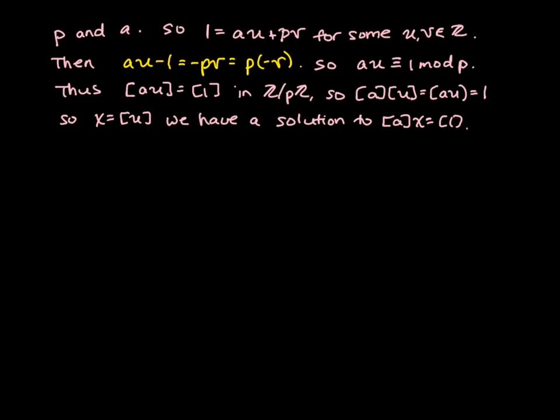So now we want to show that if the equation ax equals 1 has a solution, then this implies that whenever bc is equal to 0, b is equal to 0 or c is equal to 0. So we're going to start by supposing that bc equals 0 in Z mod pZ. Note that if b is 0, then we have nothing to prove.